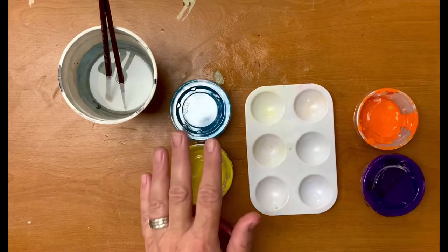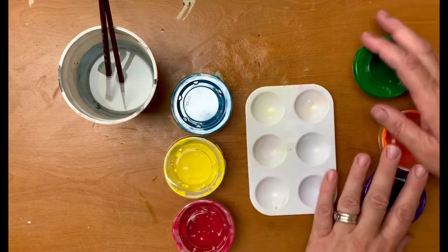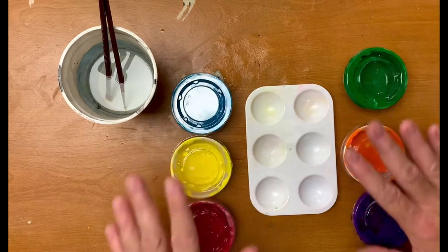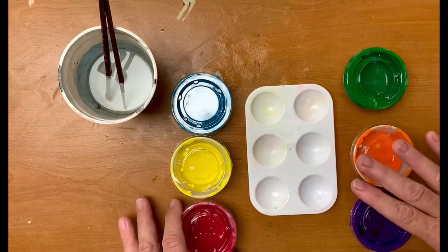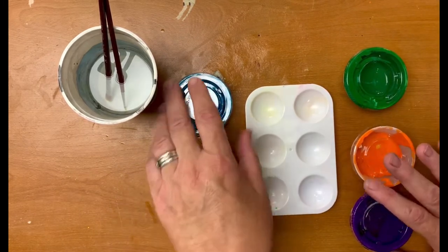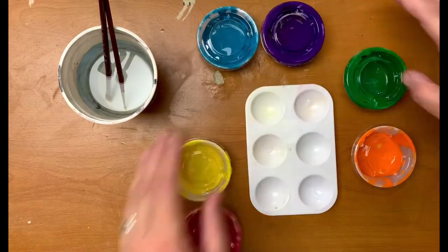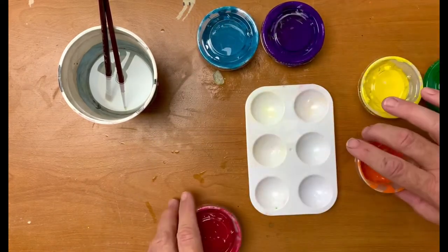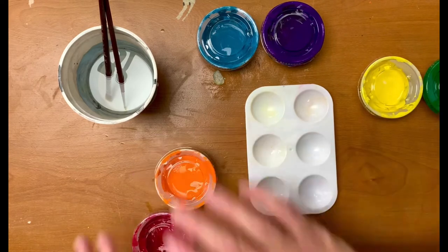For our next color triad section we're going to need the other tertiary triad. So we're going to do blue violet this time, we're going to do yellow green, and we're going to do red orange.